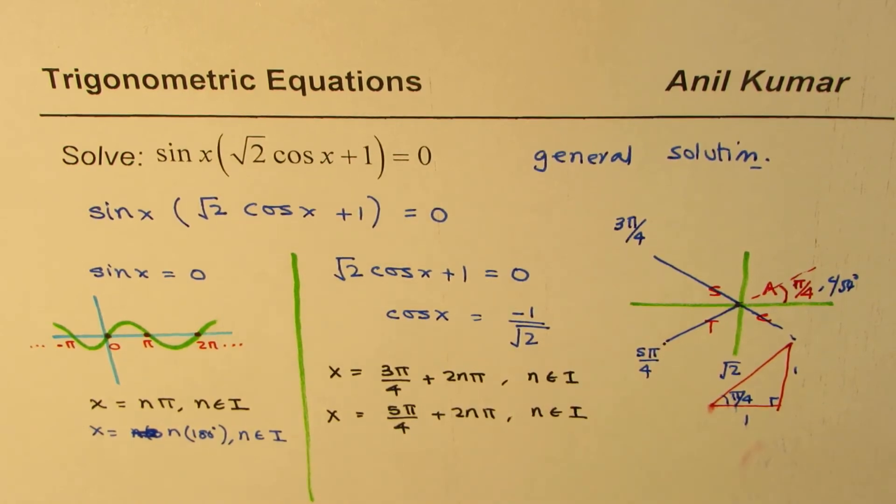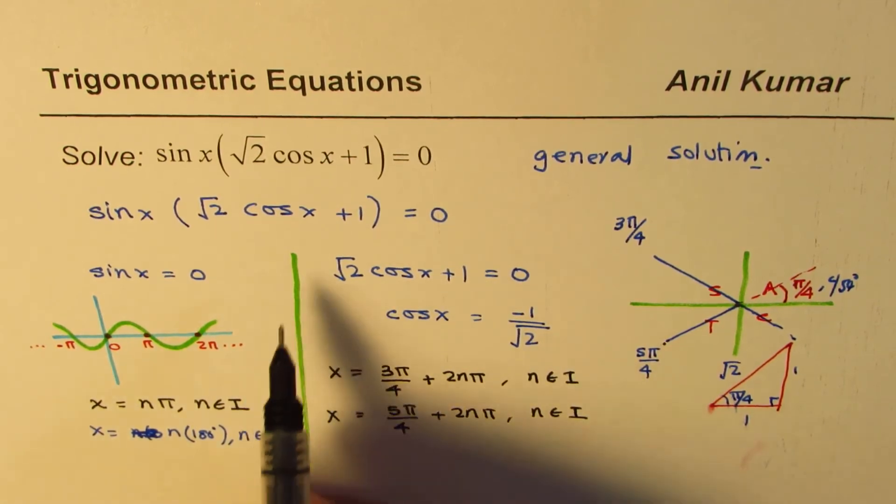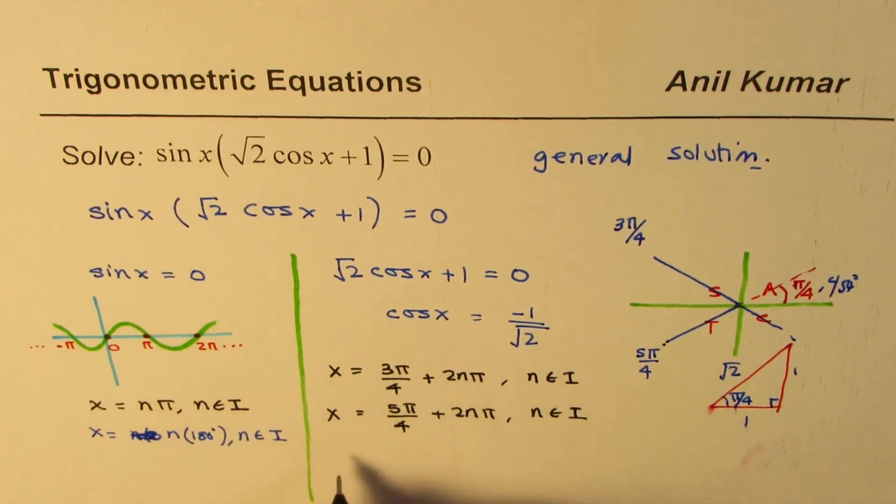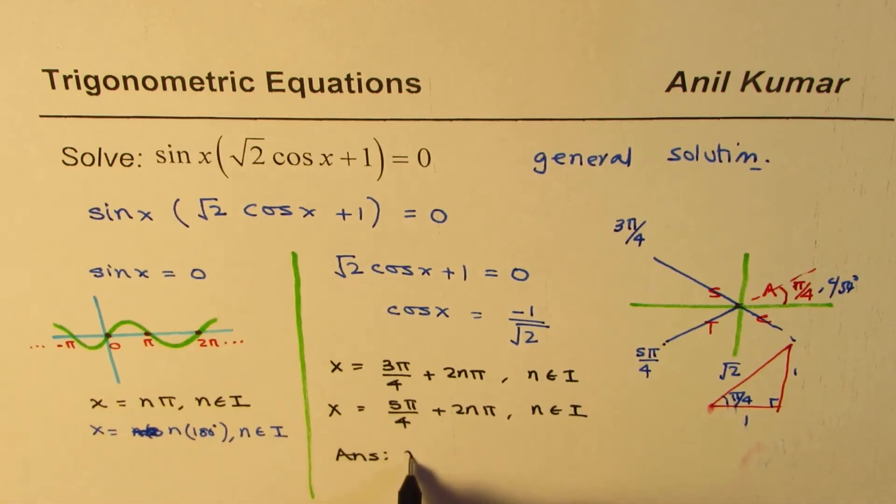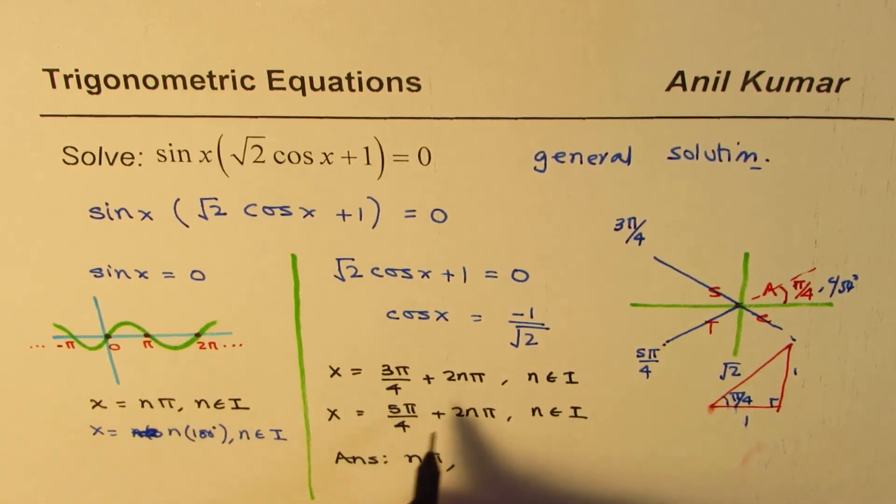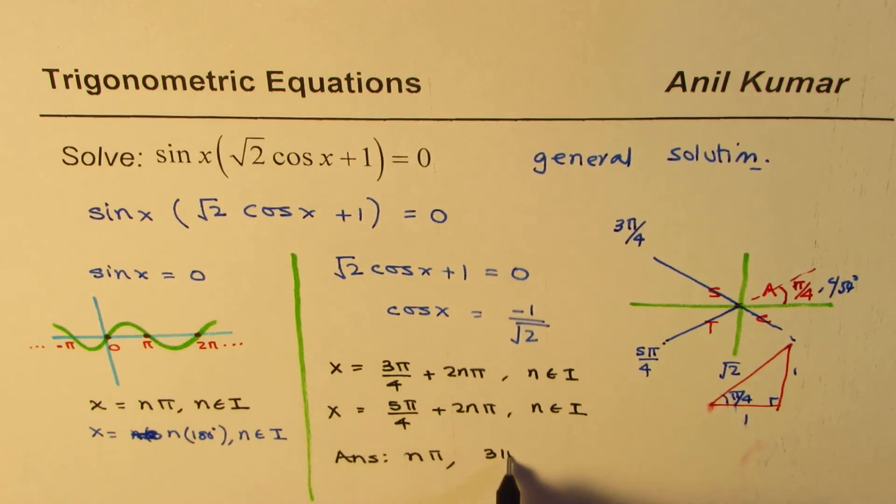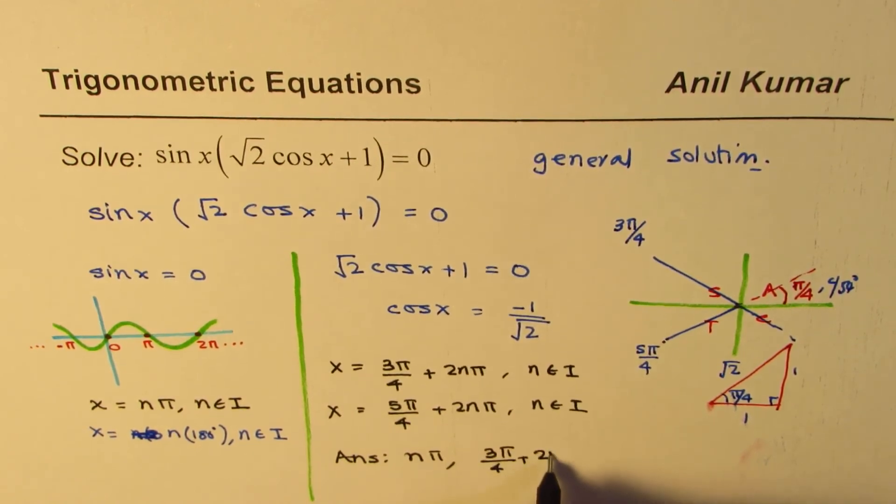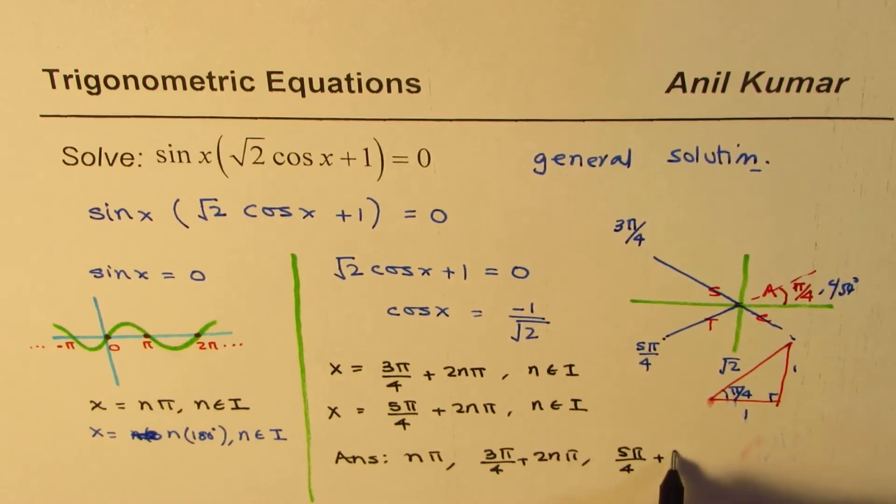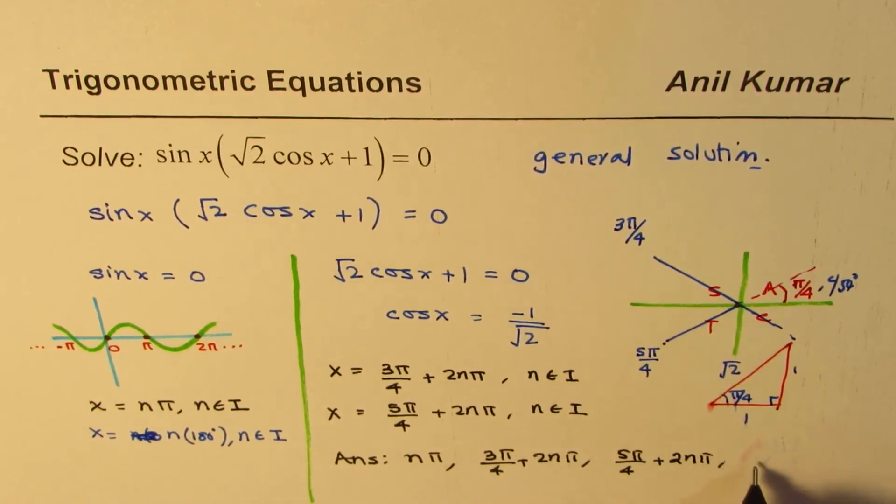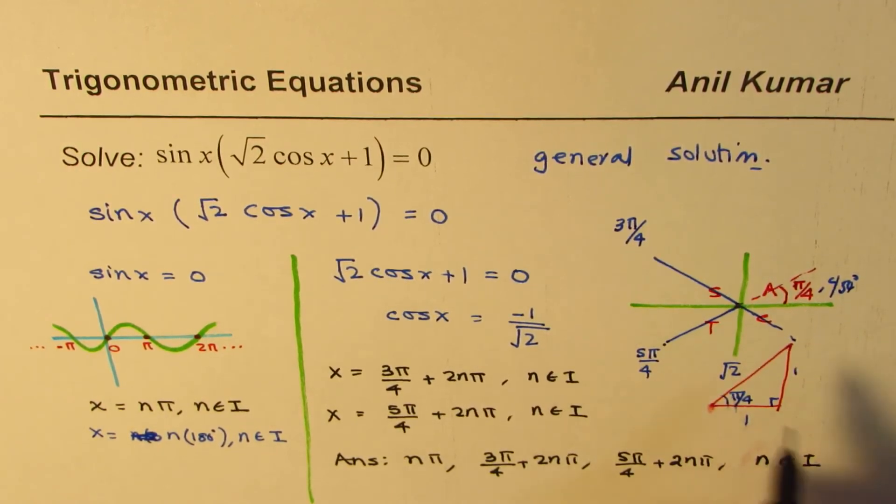So that becomes the set of solutions from the second factor. Now, we can combine both and write down our answer, which is we have n pi, and then we have all these solutions, which is 3 pi by 4 plus 2n pi or 5 pi by 4 plus 2n pi, where n belongs to a set of integers. You could use plus or minus to get the answer.